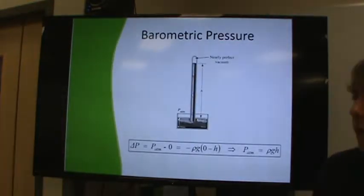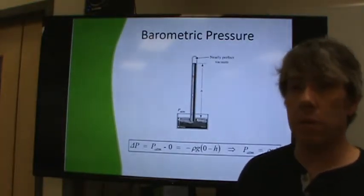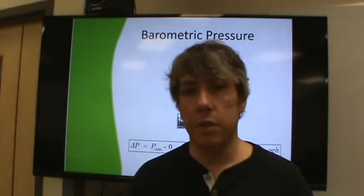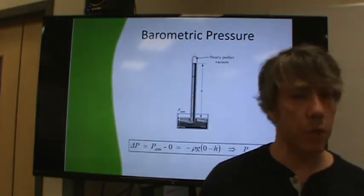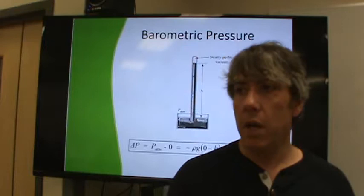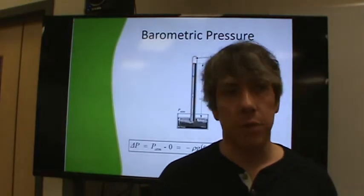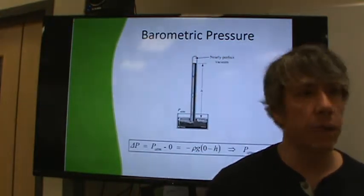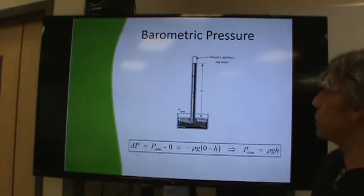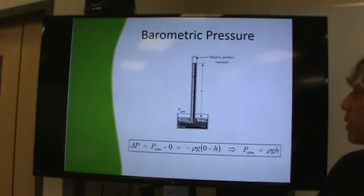Delta P equals negative rho G delta H. We can talk about barometers as well because what you notice from that equation is that the denser the fluid, the faster the pressure changes as you change elevation. The higher the acceleration of gravity, the faster pressure changes as you move down in a fluid. But we can use this equation to figure out what's happening with a barometer.